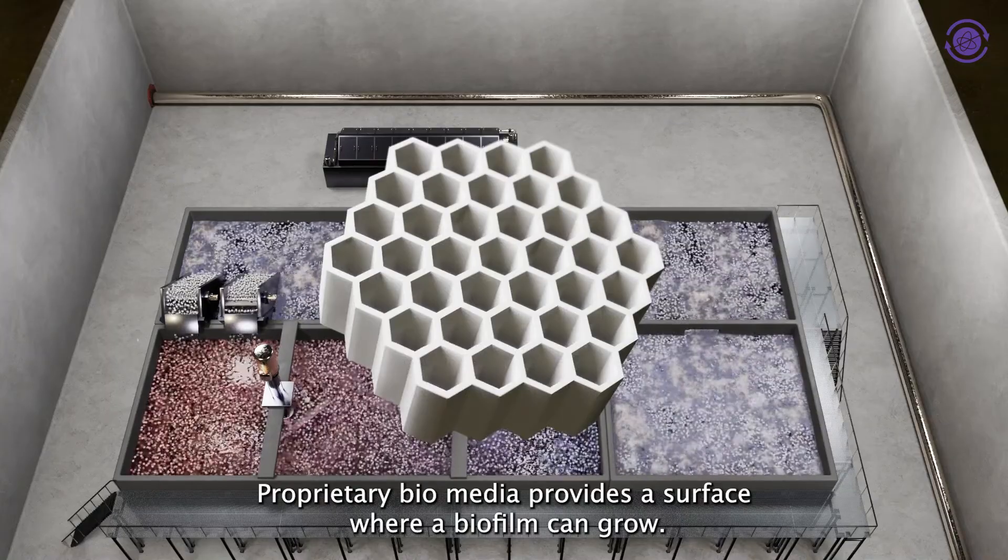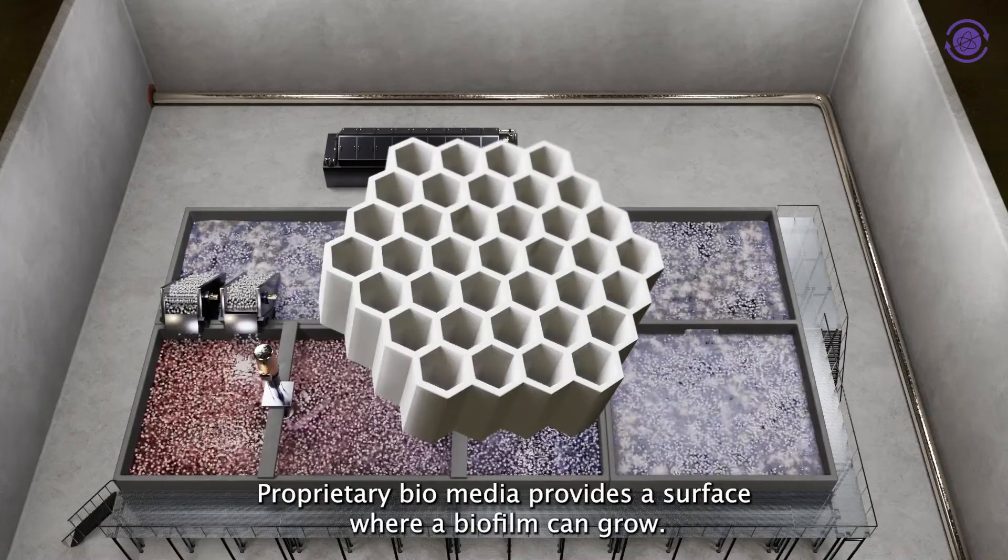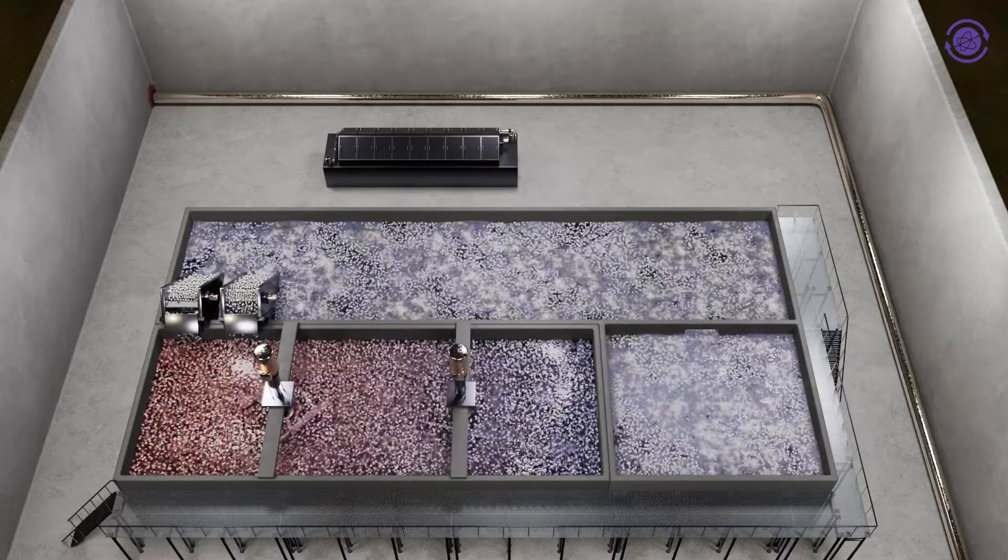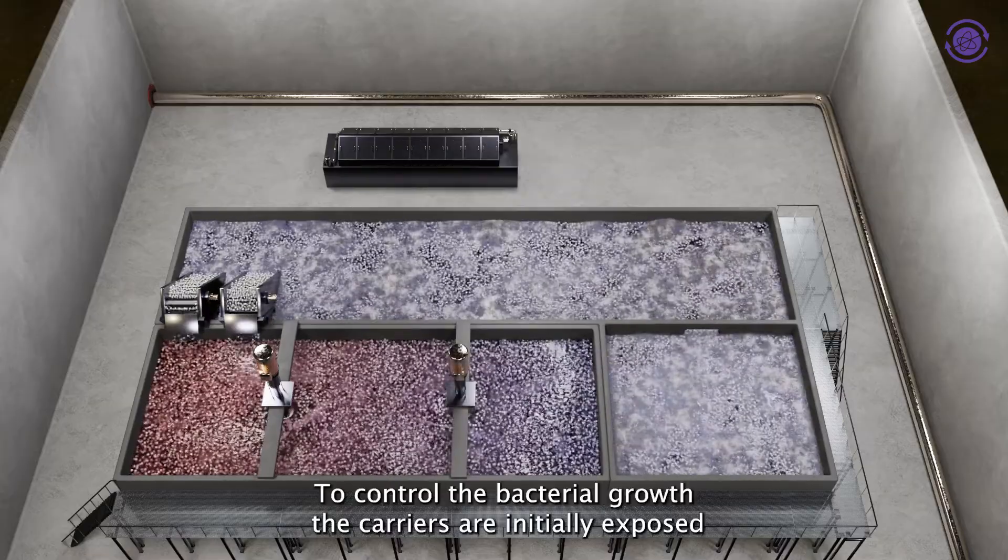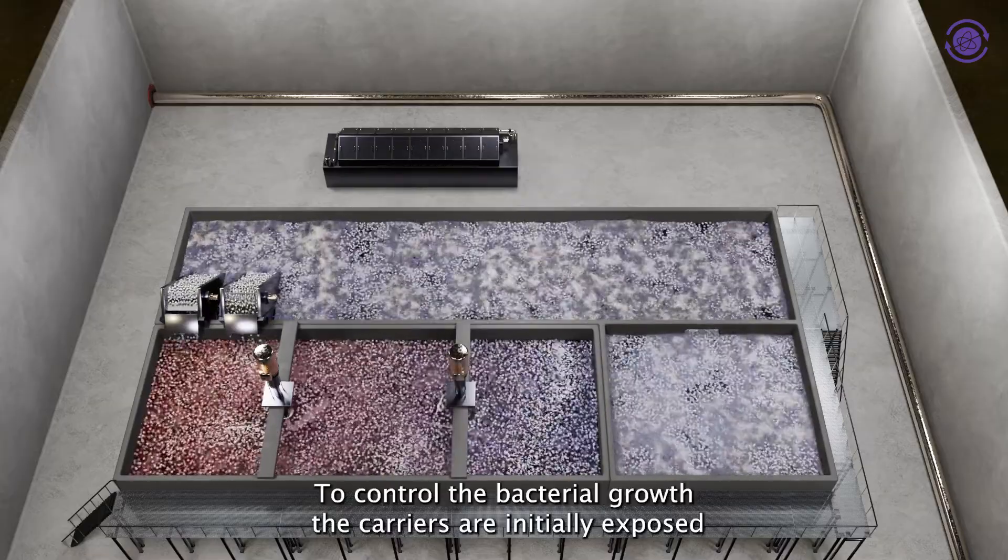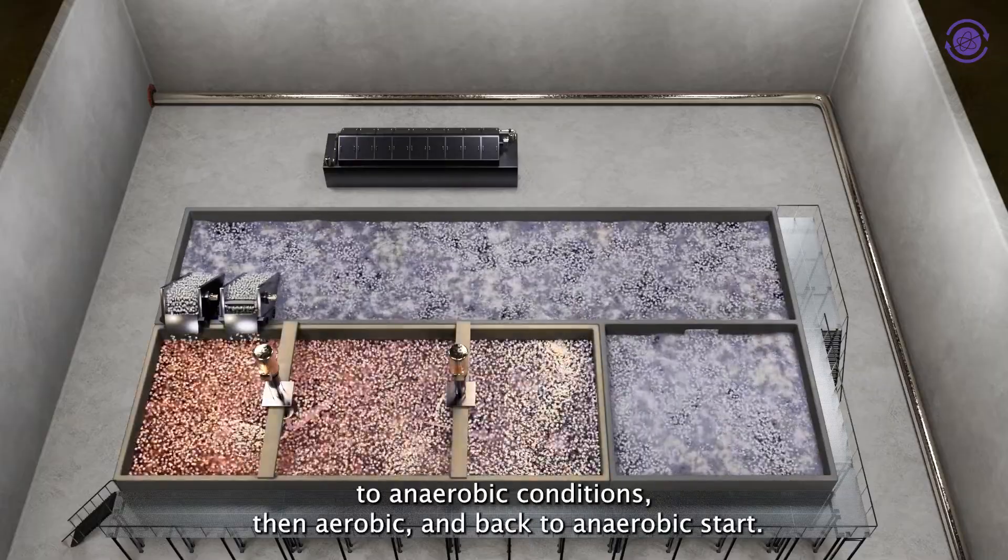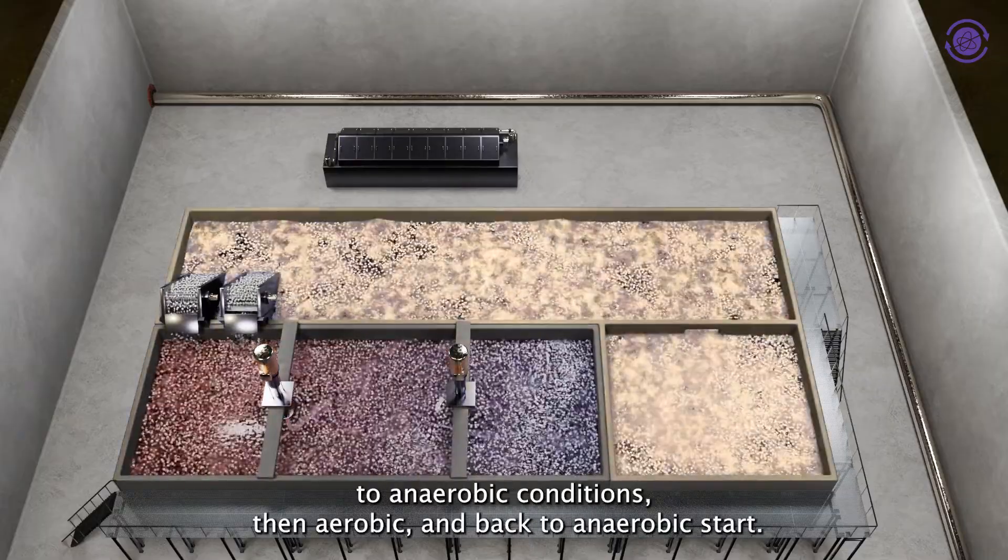Proprietary bio media provides a surface where a biofilm can grow. To control the bacterial growth, the carriers are initially exposed to anaerobic conditions, then aerobic, and back to anaerobic.